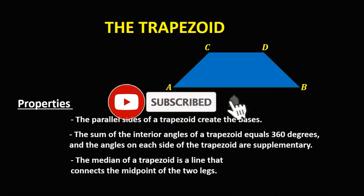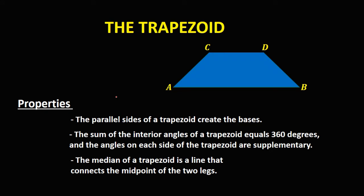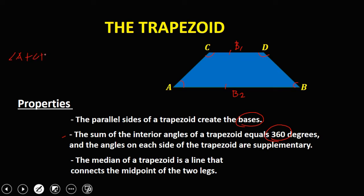Let's look at the properties of the trapezoid. The parallel sides of the trapezoid create the bases — we have base one and base two. The sum of the interior angles of a trapezoid equals 360 degrees, so angle A plus angle B plus angle C plus angle D is equal to 360 degrees.